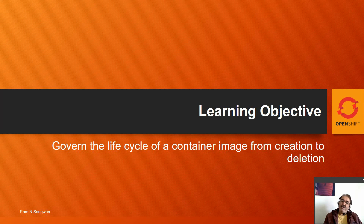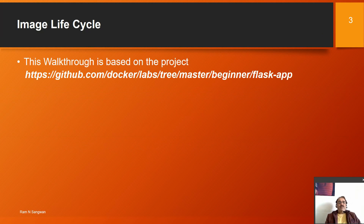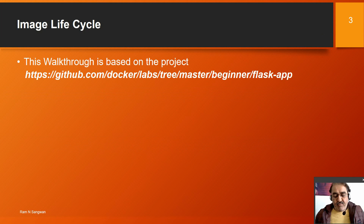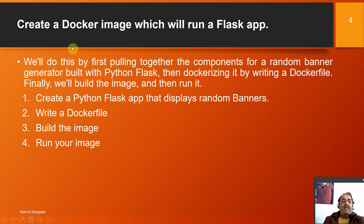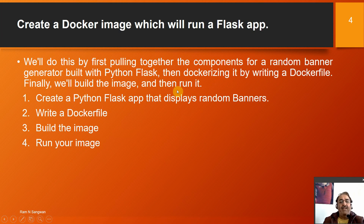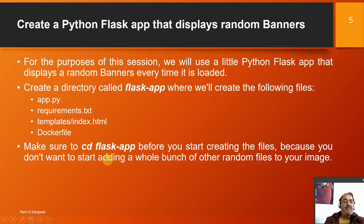This walkthrough is inspired by the project at github.com/docker-labs/tree/master/beginners/flask-app. We'll create a Docker image that runs a Flask app by first pulling together the components of a random banner generator built with Python Flask, then dockerizing it by writing a Dockerfile from scratch, then building and running the image.